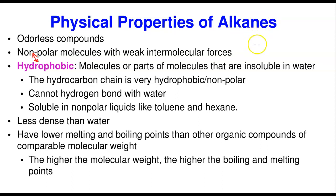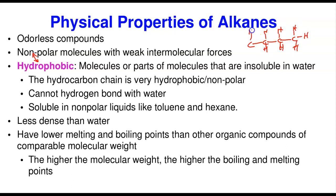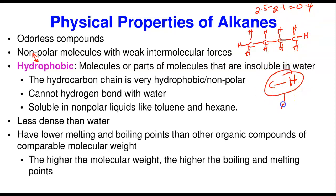Remember, alkanes are made up of just carbon and hydrogen. The carbon-to-hydrogen bond is a highly non-polar bond because the difference in electronegativity between carbon and hydrogen is 0.4. The electronegativity of hydrogen is about 2.1 and that of carbon is about 2.5, so 2.5 minus 2.1 gives you 0.4. Anything less than 0.5 is non-polar, so every carbon-to-hydrogen bond is a non-polar bond.